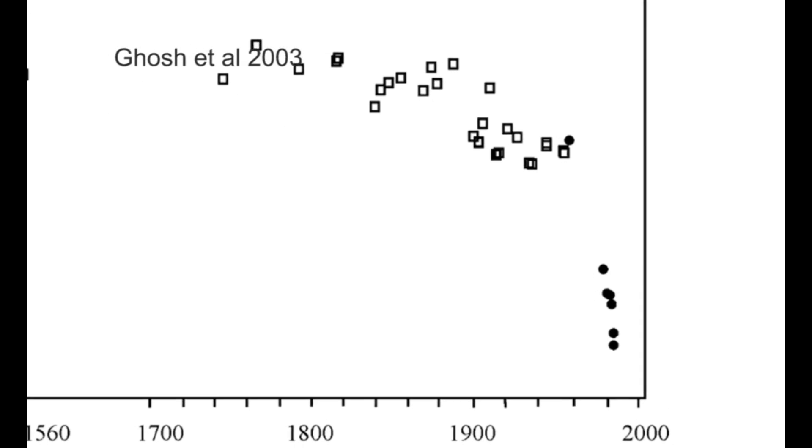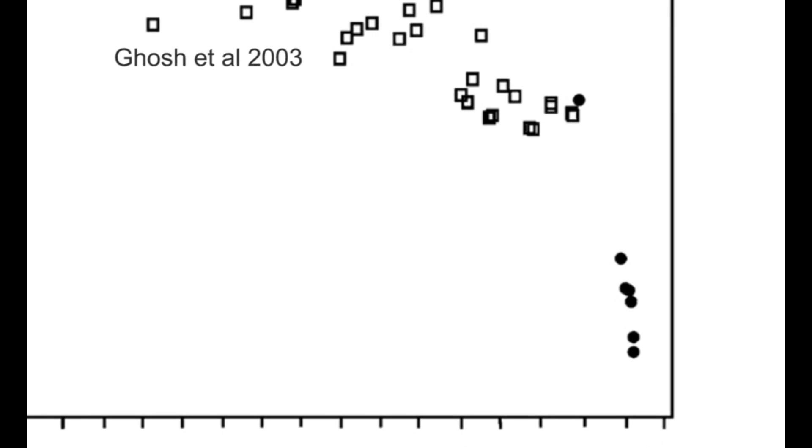Carbon-13 is a very trace stable form of carbon, the dominant one being carbon-12. And when we look at the carbon-13 to carbon-12 ratio of the atmosphere, it's been plummeting, which tells us that the source of carbon is from something that has very little carbon-13 in it. The processes that separate carbon-13 from carbon-12 are biological photosynthesis. So this is a fossil form of carbon that is organic matter, and that points directly to coal, oil, and natural gas.